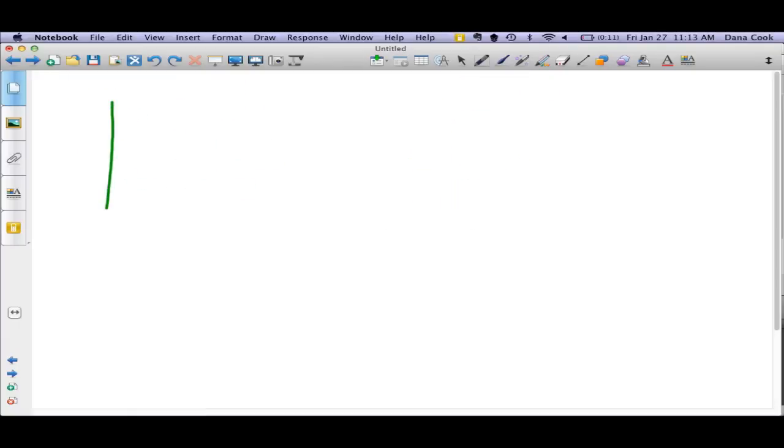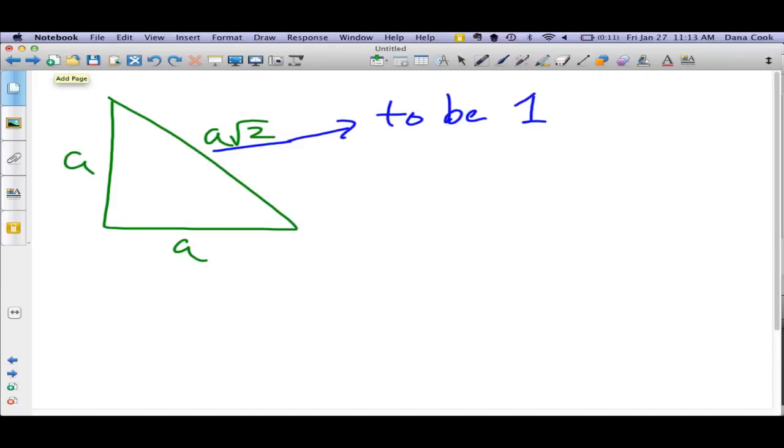Let's again look at the isosceles triangle. This is A, this is A, and A times the square root of 2. In the unit circle, the reason why it's called the unit circle is that it has a radius of 1. So I want this number to be equal to 1. How do I do that? Well, couldn't I divide it by A times the square root of 2? If I take A times the square root of 2 and divide it by A times the square root of 2, would that equal 1?